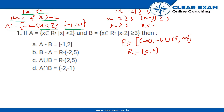Now in case of B, we have mod of x minus 2 is greater than or equal to 3. So therefore we get x is greater than or equal to 5 and x is less than or equal to 5. So this is the range of B — it includes all real numbers minus those from 0 to 4.